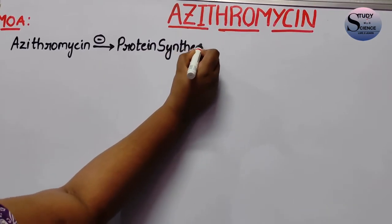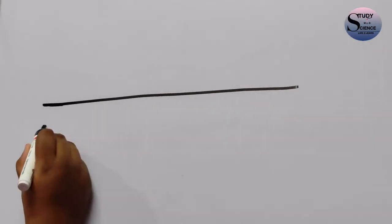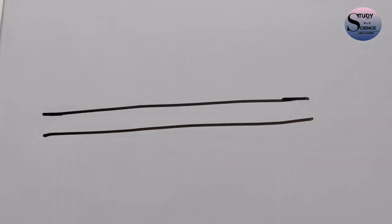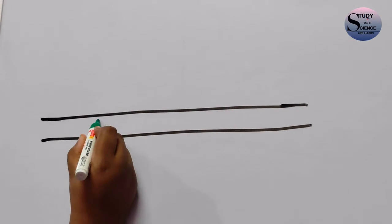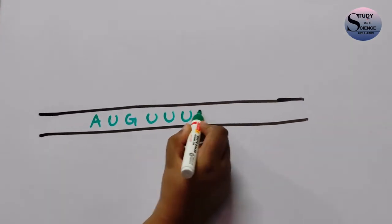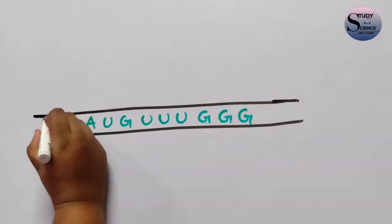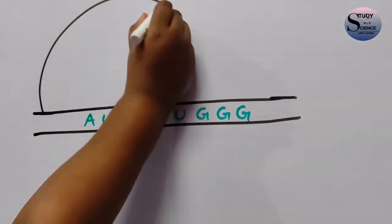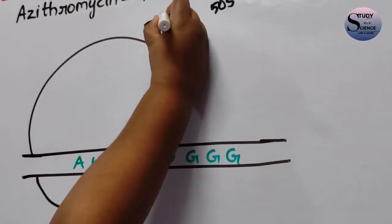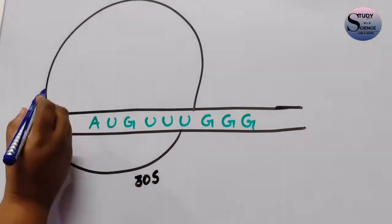If you see the mRNA of the bacteria, this mRNA contains the codes which can code for the amino acids. So there are codes like AUG, GUU, UUU, GGG and so on. This mRNA also contains ribosomes — one is the 50S ribosome and the other is the 30S ribosome.